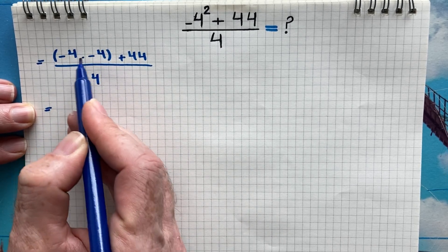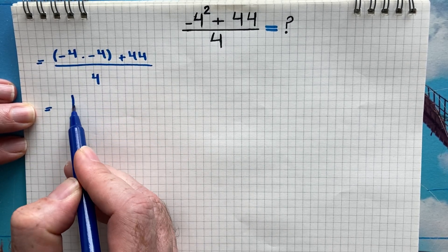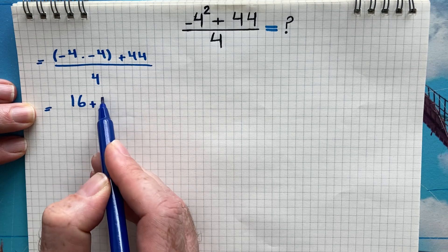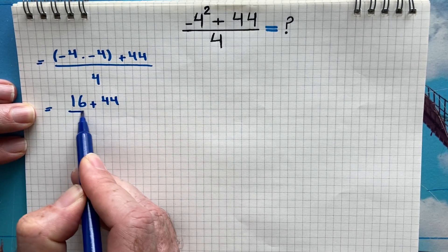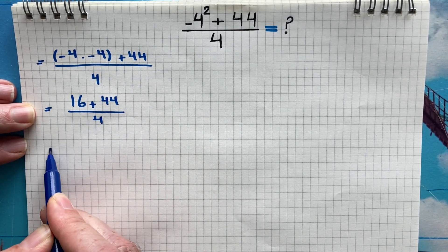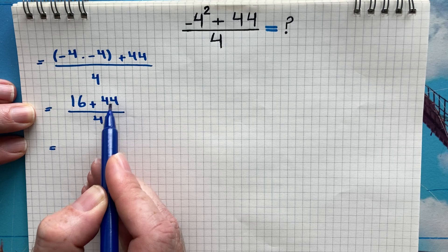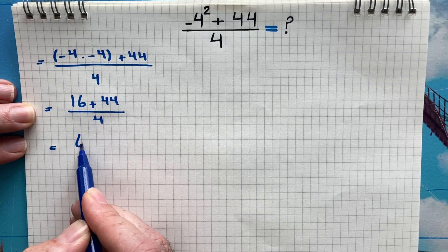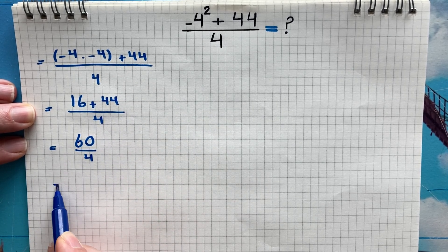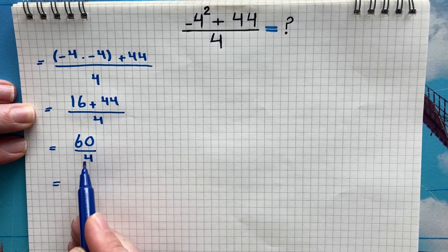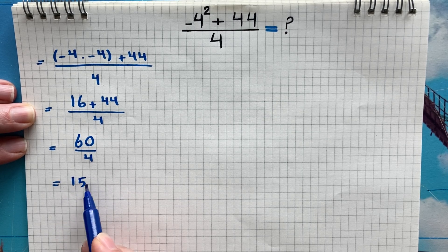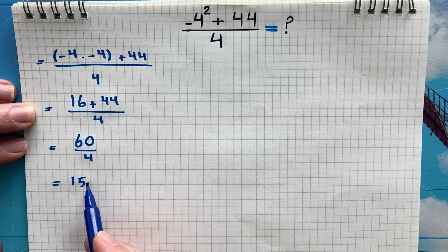Negative 4 times negative 4 is going to be 16, plus 44 over 4. As you know, 16 plus 44 is 60 over 4, and 60 over 4 is 15. But let me ask you a question.